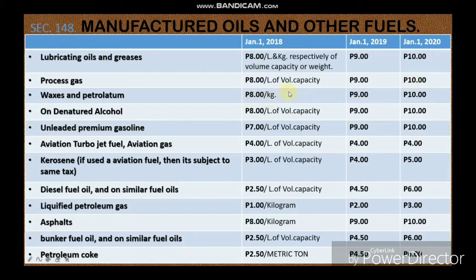For waxes and petrolatum it is 10 pesos per kilogram. On denatured alcohol, 10 pesos per liter of volume capacity. For unleaded and premium gasoline, also 10 pesos per liter of volume capacity. Aviation turbojet fuel and aviation gas is 4 pesos per liter of volume capacity. Kerosene is 5 pesos per liter of volume capacity, but if kerosene is used as aviation fuel it is subject to the same tax as aviation turbojet fuel, which is 4 pesos per liter of volume capacity.